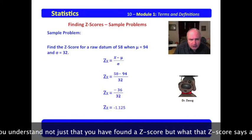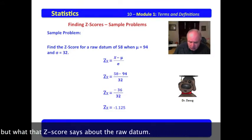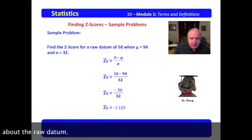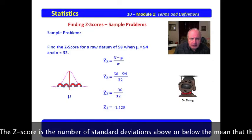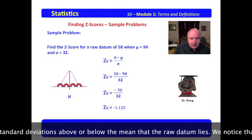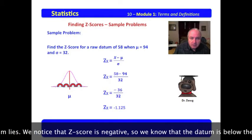Now, it's important at this point that you understand not just that you have found the z-score, but what that z-score says about the raw datum. The z-score is the number of standard deviations above or below the mean that the raw datum lies. We notice that the z-score is negative, so we know that the datum is below the mean.